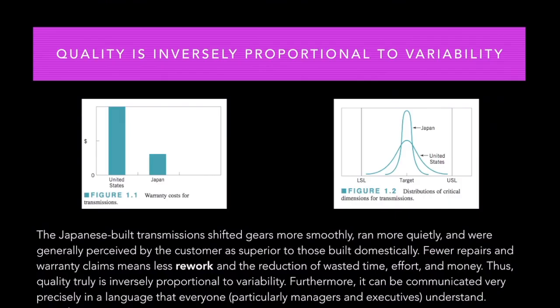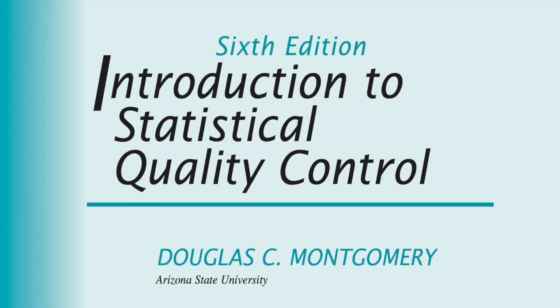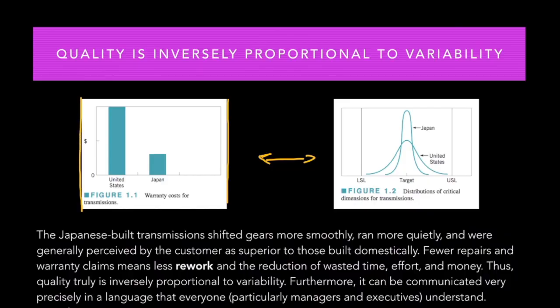The current definition of industrial quality is that quality is inversely proportional to variability — so the more variability you have, the lesser quality you have in your process. The two pictures you can see here are taken from the bible of quality statistics: 'Introduction to Statistical Quality Control' by Douglas Montgomery. These two pictures are about a real use case — let's start with the one on the left.